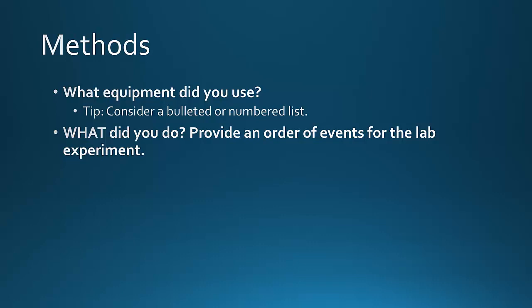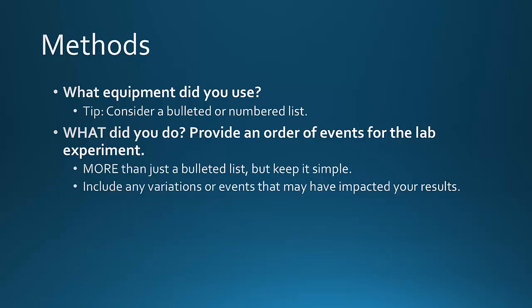The order of events should be more than just a bulleted list, though it should be as simple and direct as possible. Be sure to include any variations or events that may have impacted your data. Here's a tip. I strongly encourage you to take notes during the lab experiment. If you have a handout telling you what to do, use that for taking notes. Or use your camera phone to take pictures to remind you of what you were doing and when you were doing it.